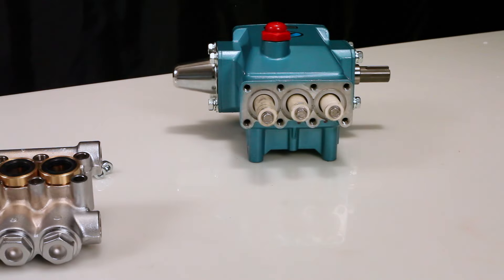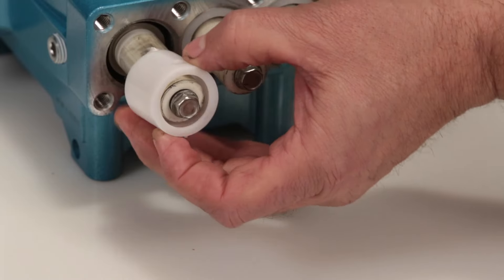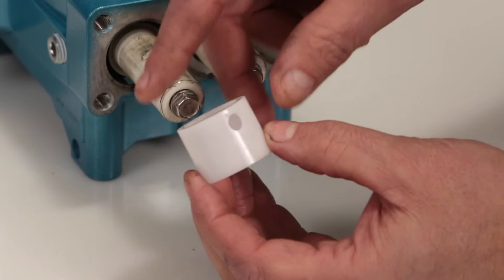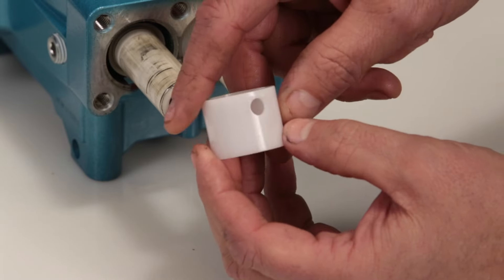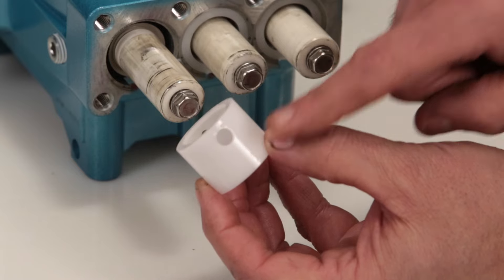Before reinstalling the manifold, be sure to replace the plunger retainer gasket included in the seal kit. Begin by removing the seal retainer. The seal retainer has two holes, one of which has two small tabs which are installed facing down into a slot in the crankcase.